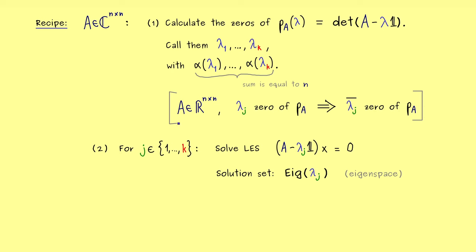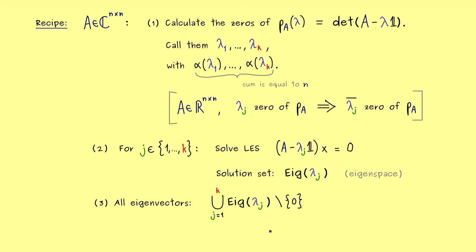We do that for every j, giving us all the eigenspaces for matrix A. Depending on what you want to do, you write them as subspaces of C^n or R^n. In the end, the set of all eigenvectors of A is obtained by taking the union of all the eigenspaces. Most crucially, you should not forget that eigenspaces are subspaces — they also contain the zero vector as an element — but the zero vector is never an eigenvector. So we exclude the zero vector to get the set of all eigenvectors. That is the whole recipe.